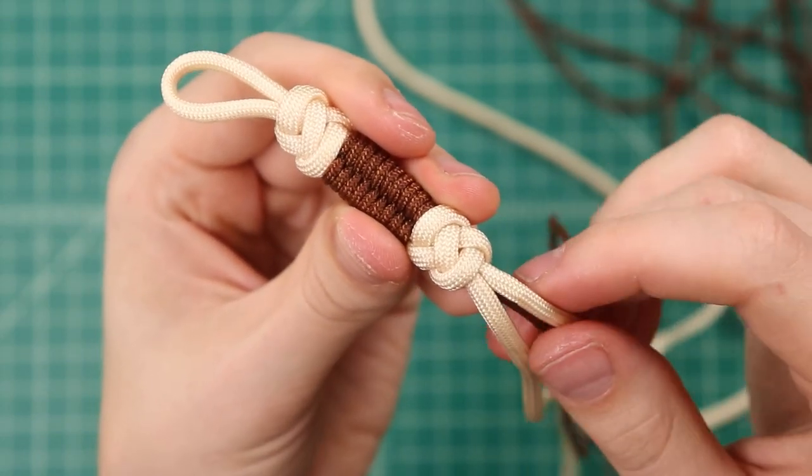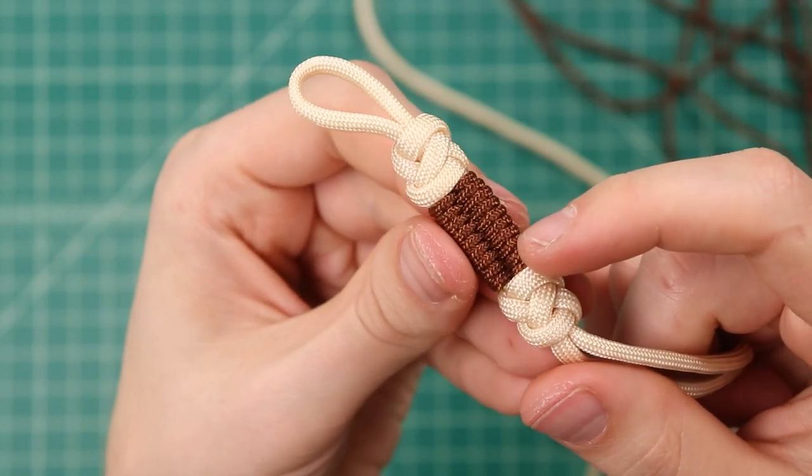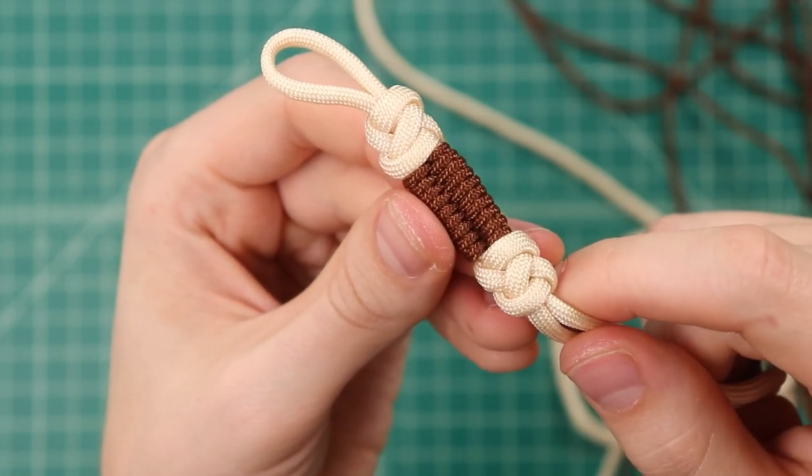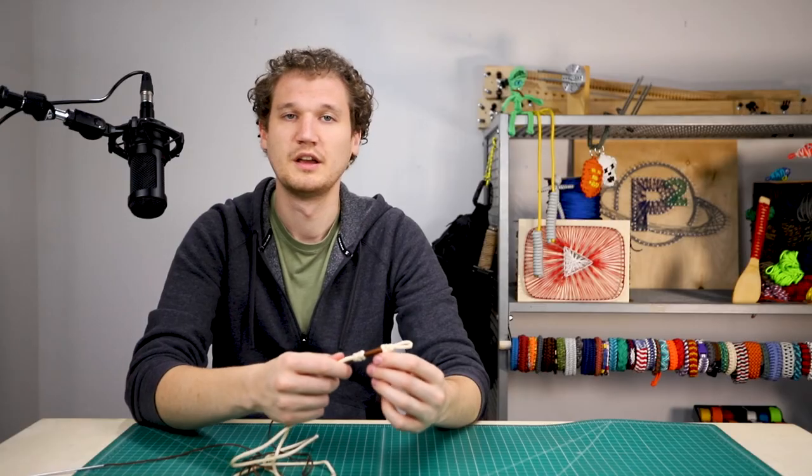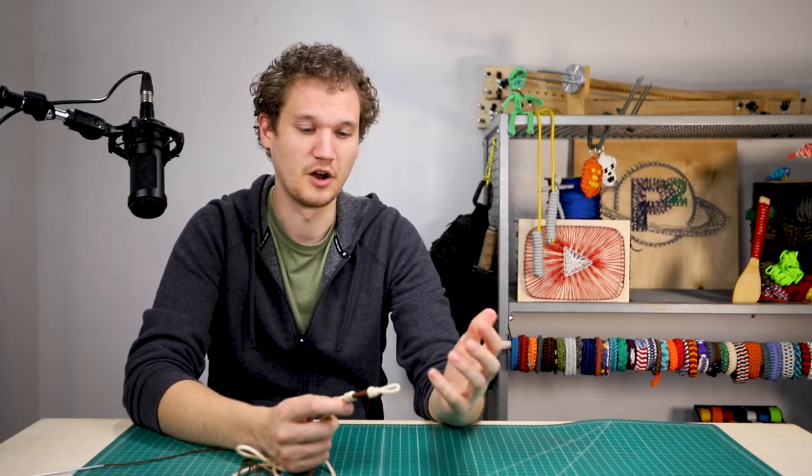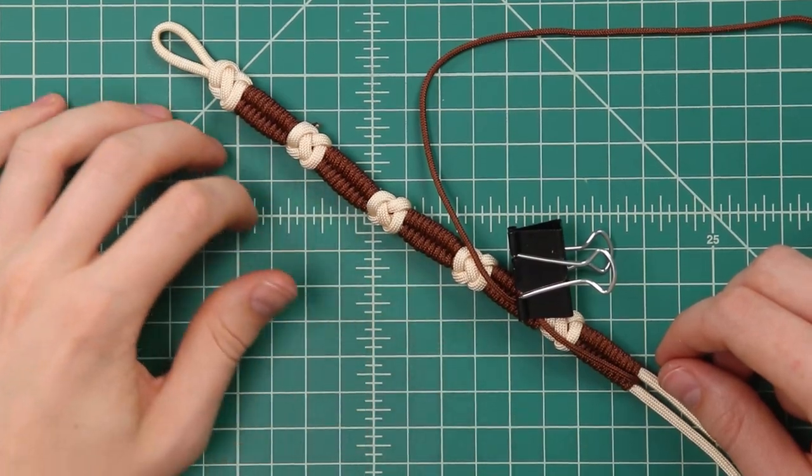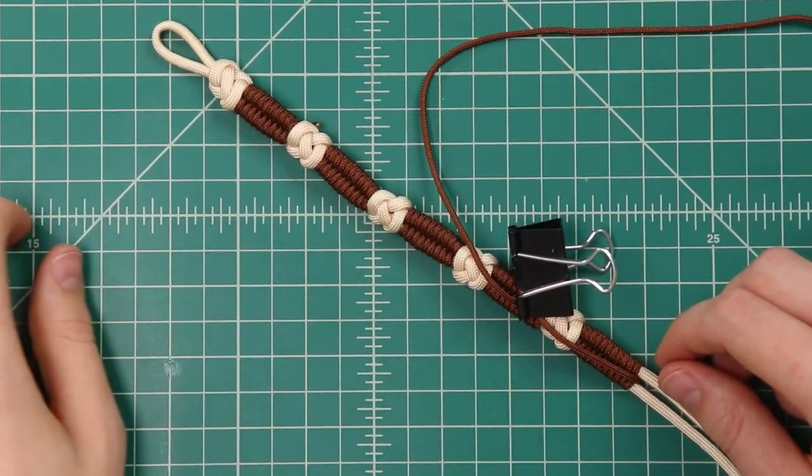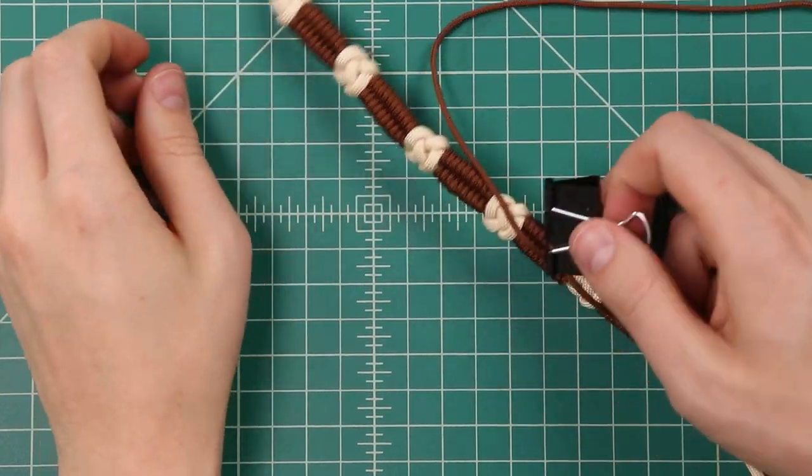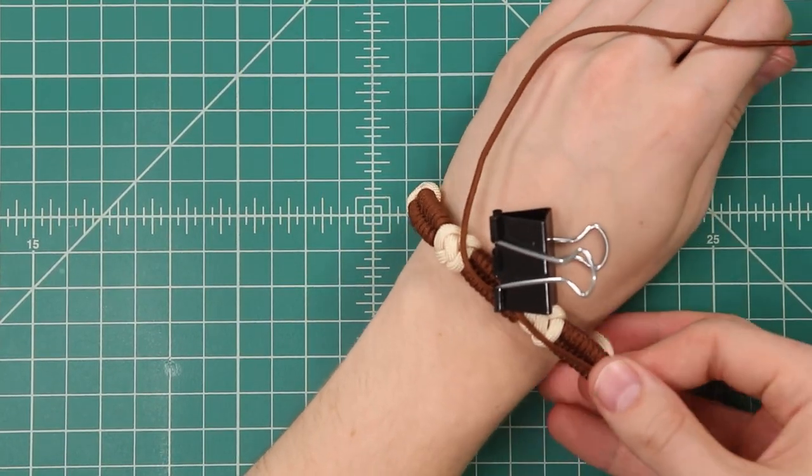And we'll just keep with that pattern of 10 stripes of the fishtail, followed by another jewel knot. We'll just keep on repeating that pattern until our bracelet is our desired length. All right, so we managed to fit in five repeats of the pattern, and that's about the right size for my wrist. I think my wrist is about seven inches.